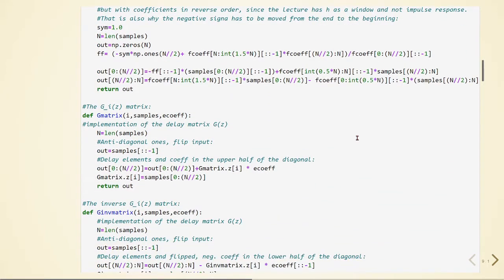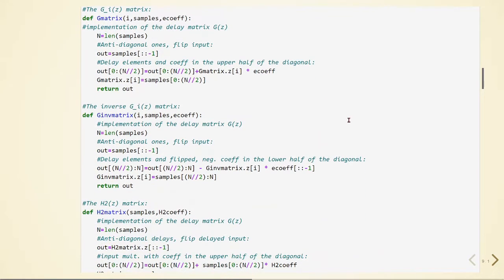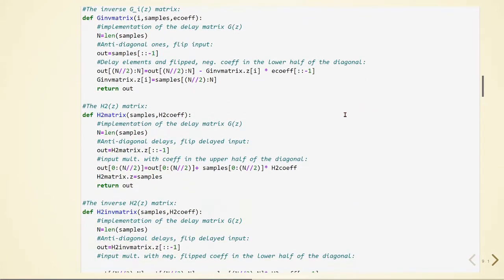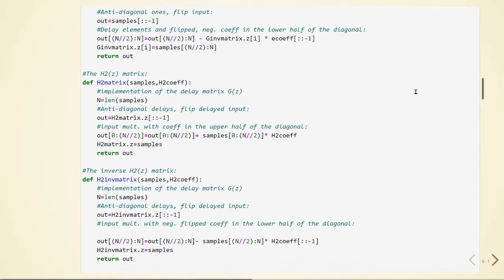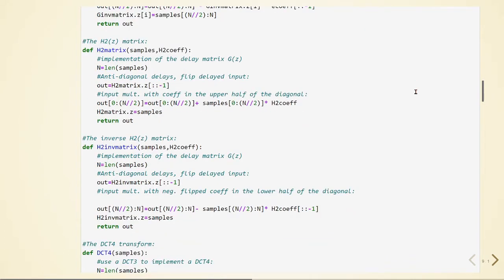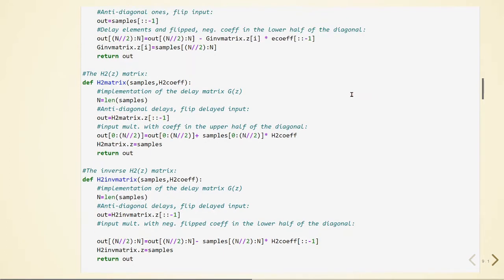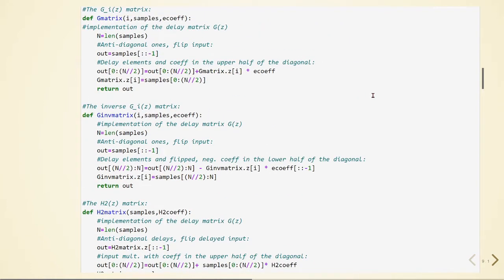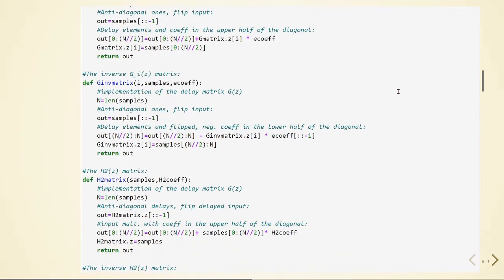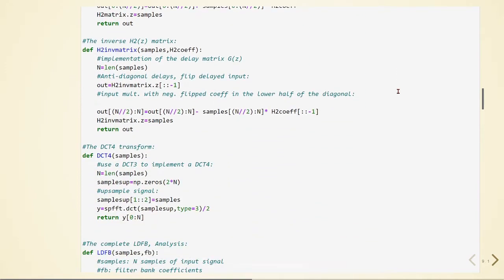Here we have matrix G, the inverse of matrix G, here we have matrix H, the inverse of matrix H. We see that there are inputs multiplied with coefficients in the upper half of the diagonal. We have anti-diagonal delays, the flip delay input, and we are using them like we have seen in the theory part, the G matrix and the H matrix and we need to take the inverse.